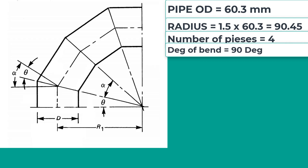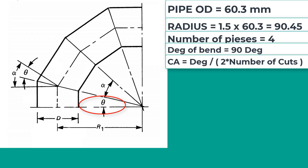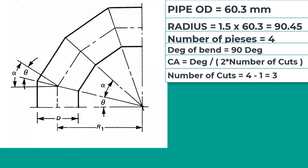Now we can calculate our cutting angle. Cutting angle equal to degree of bend divided by 2 into number of cuts. Number of cuts equal to number of pieces minus 1.